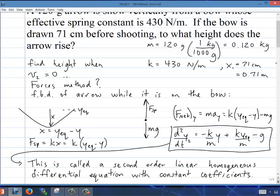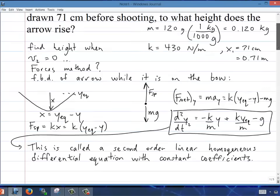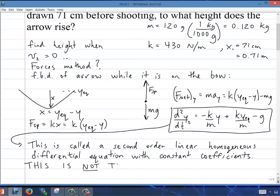But don't forget, the arrow is still on the bow, right? And you have to find when it leaves the bow and then becomes a projectile and goes up to the top of its path. So anyway, the point here is basically this is not the easiest way to solve this problem.